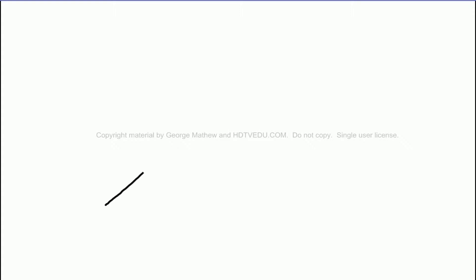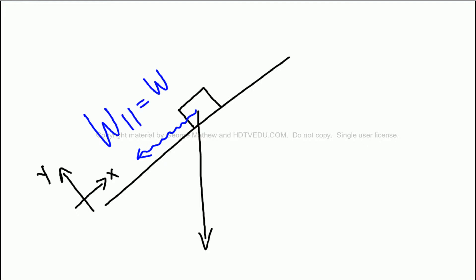Whenever we have a mass kept on an inclined plane, the gravitational force always acts vertically down. Define your x and y parallel and perpendicular to the inclined plane, and then you will see that you have a parallel component, W parallel, and that is the same as Wx. We are just looking at the magnitudes.